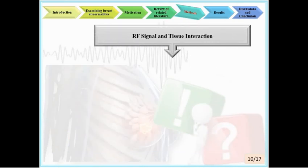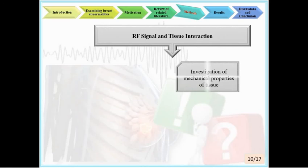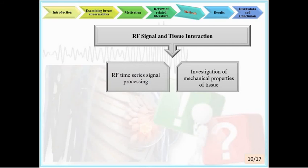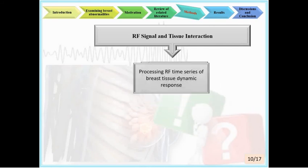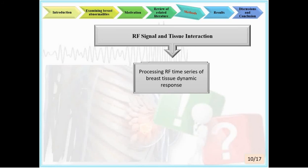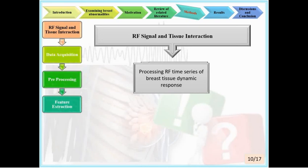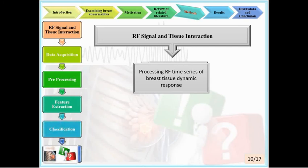Studies using RF information can be divided into two categories: those using mechanical properties by calculating elastic coefficients, and those using RF time series with fixed probe and tissue. This paper proposes combining both methods — using RF time series information while applying mechanical pressure or vibration stimulation to the tissue. To investigate the effect of central frequency of the probe on the method called RFTSDP and classification accuracy, the steps followed are: RF signal and tissue interaction, data acquisition, pre-processing to make RF time series, feature extraction, and finally classification into healthy and cancer groups.